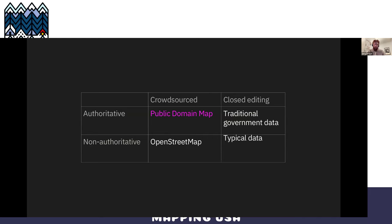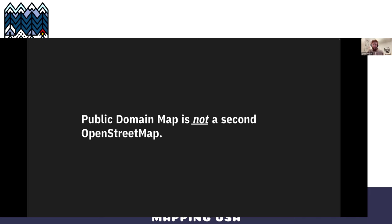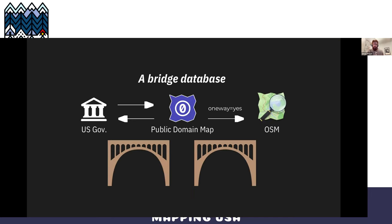The idea of Public Domain Map came about because traditional government data is closed to editing by the public, so they're not getting the benefit of the crowdsourcing we have in OpenStreetMap. But OpenStreetMap data can't really be used and redistributed by the government because all the data needs to be in the public domain. So we built Public Domain Map as the tool to solve this problem — it is not a second OpenStreetMap, it is instead a bridge database that runs on the OpenStreetMap stack of technologies.